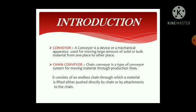Chain Conveyor is a type of conveyor system for moving material through production lines. It consists of an endless chain through which material is lifted, either pushed directly by the chain or by attachments to the chain. As the material is transported with the help of the chain, it is called a chain conveyor, and it is mainly used in production lines.